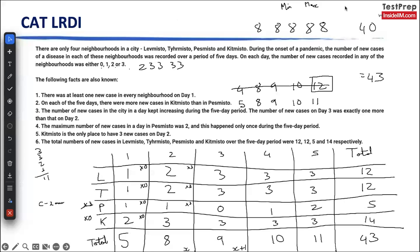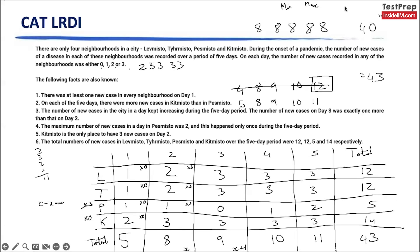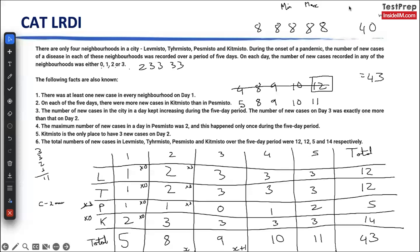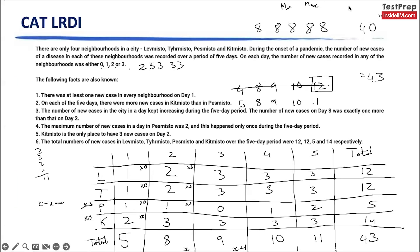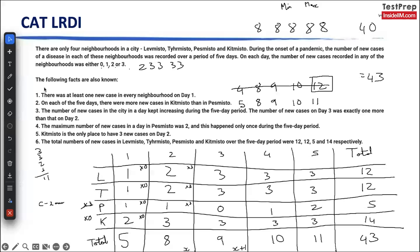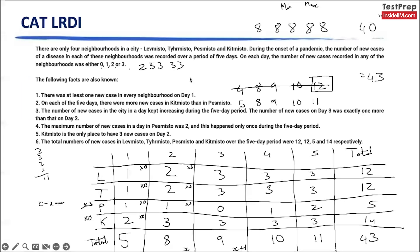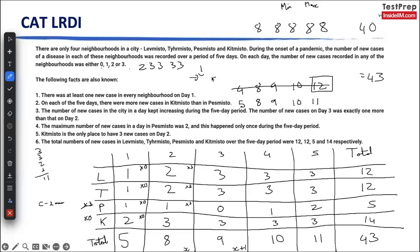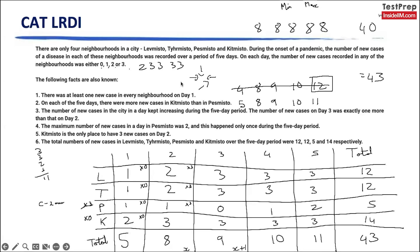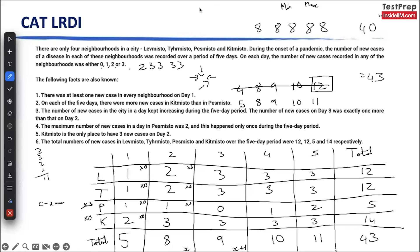This is CAT-level LRDI — nothing complicated. Logical people are not able to connect it because nobody is spending time on thinking. That's why I tell you to play Sudoku: in Sudoku you look at a problem from this angle, this angle, this angle, and this angle — it develops 360-degree thinking.